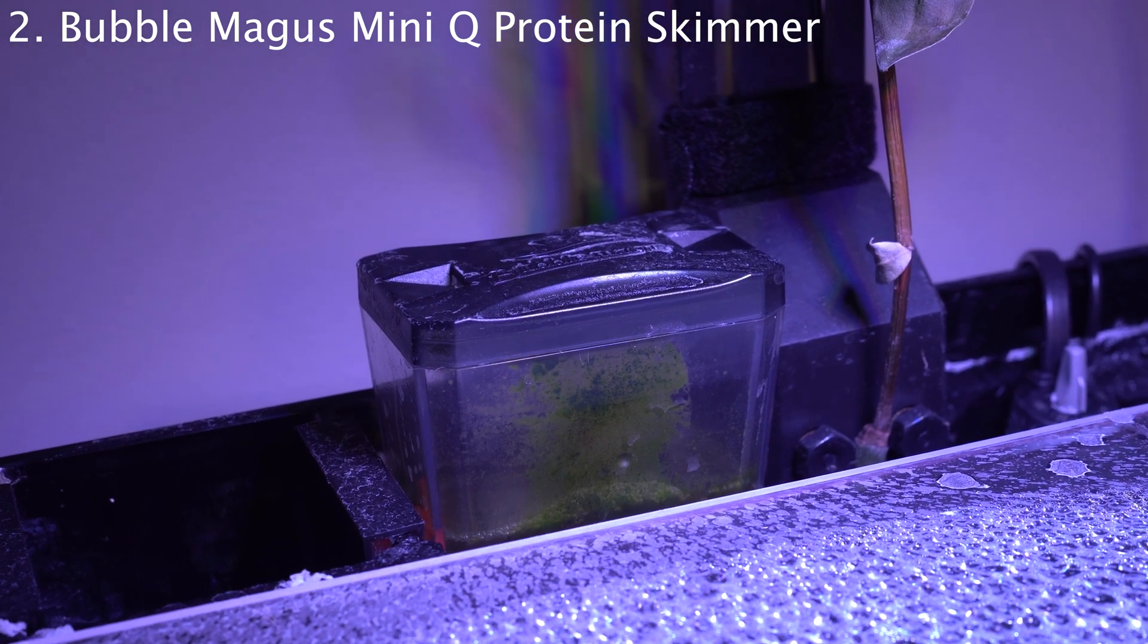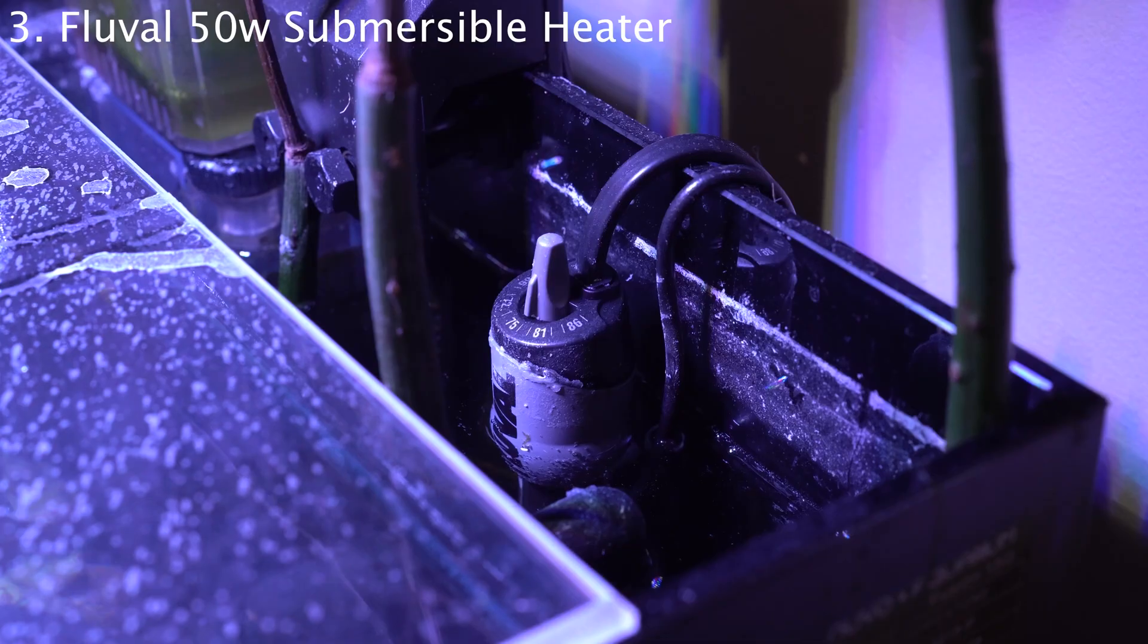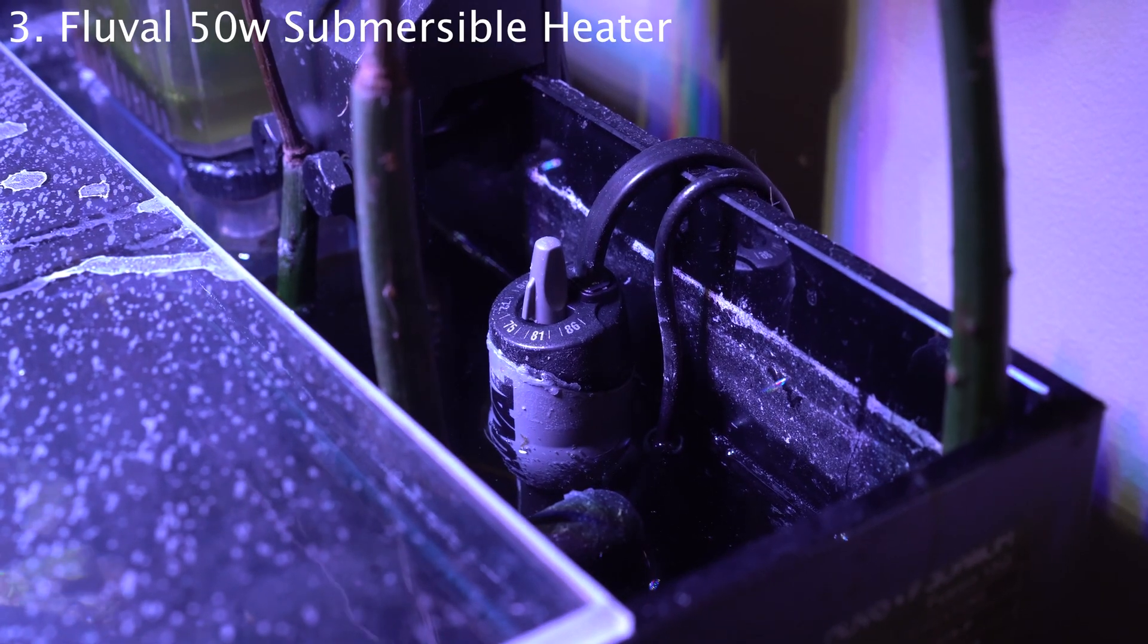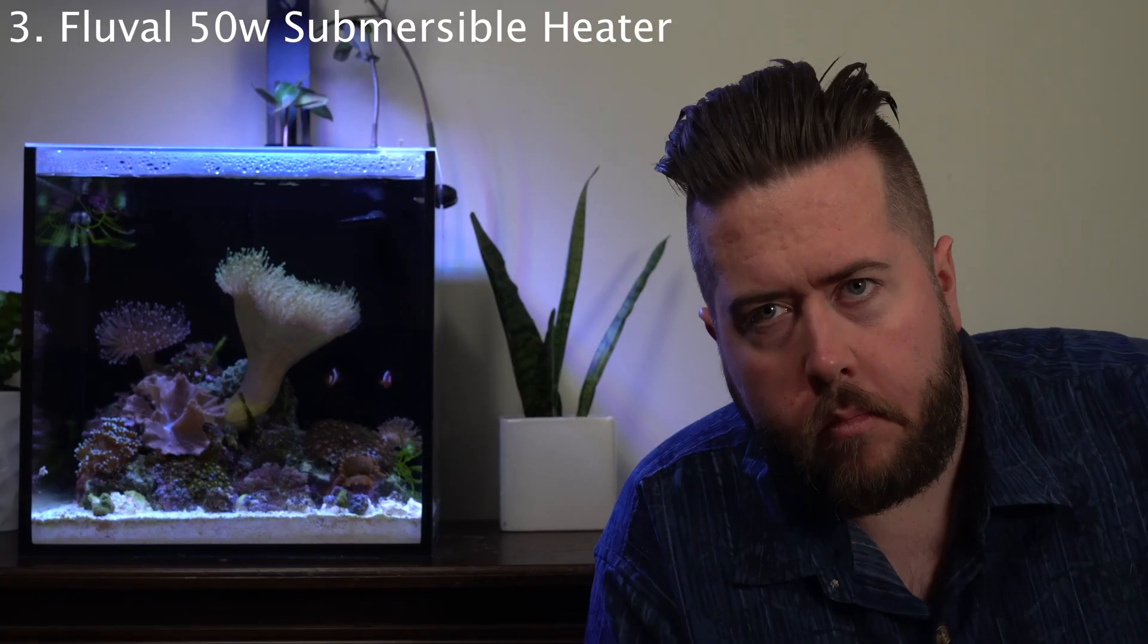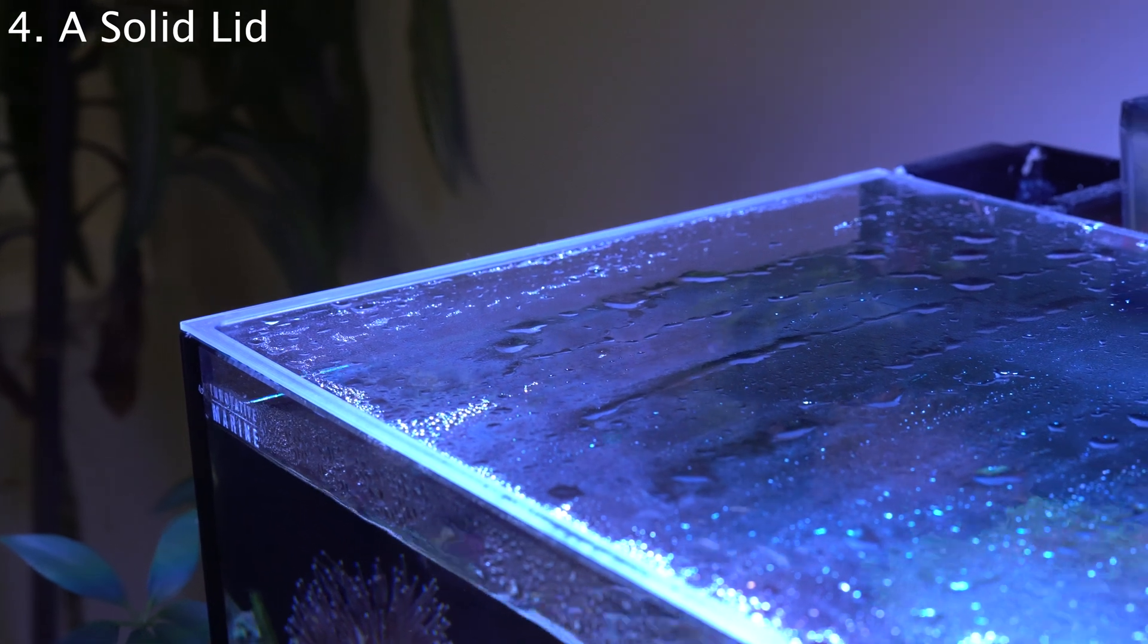Number three: PetSmart 50-watt heater. That's it. Cost me 40 bucks, easy, plug it in, done. And number four: the acrylic lid that my good friend Jay from Unorthodox Reef made for me. It's plain, simple, doesn't have any holes in it other than a little porthole for feeding, and it keeps evaporation to a minimum.